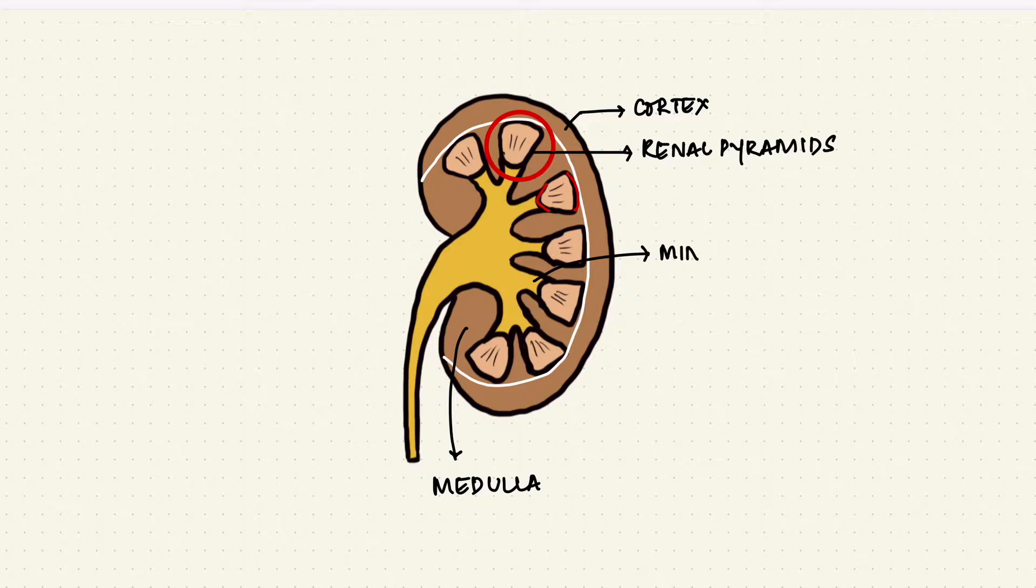The minor calyx first and they fuse to form major calyces which together form the renal pelvis and that continues down as the ureter.